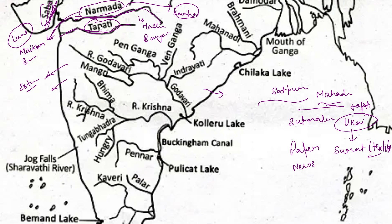So the main west-flowing peninsular rivers are Narmada, Tapi, Sabarmati, Mahi, and Luni. Now looking at the east-flowing rivers, we have the Narmada river, Chilika Lagoon Lake, and the Brahmani river. Brahmani and Baitarni flow together up to a point. The source of Mahanadi is in the Raipur district area, flowing from Odisha.